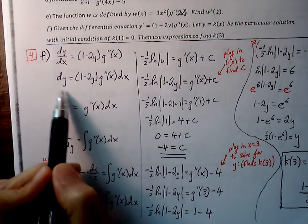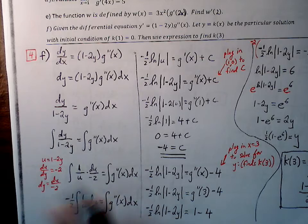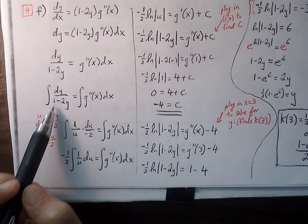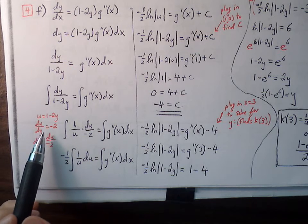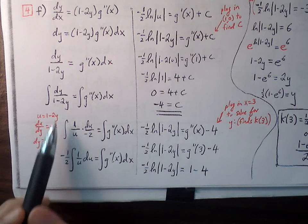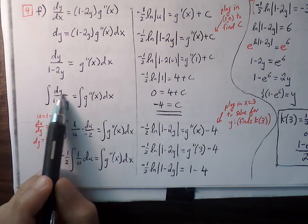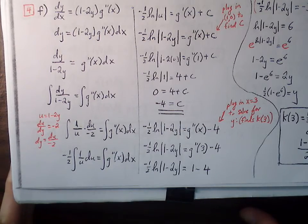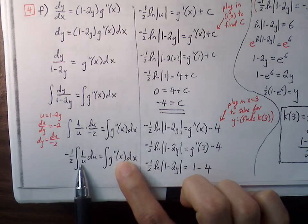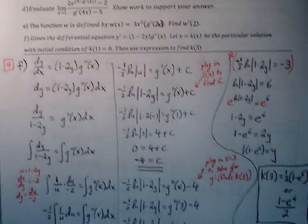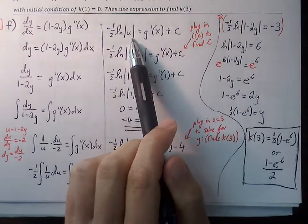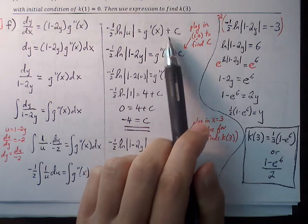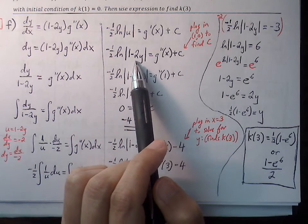Now we have full separation: the dependent variable y is on the left, and the independent variable x is on the right. We set up our indefinite integrals. The left side requires u-substitution — we let u equal one minus two y. Then du over dy equals negative two, so dy equals du over negative two. After substitution, the denominator becomes u and we pull out du over negative two, giving us negative one half times the integral of one over u du, which we recognize as natural log.